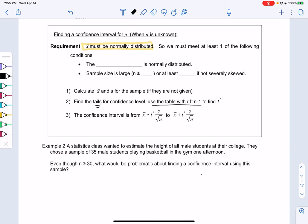The first one is just that the population is normal, which we often don't know. And so if we don't know that, then we just need the sample size to be at least 30.